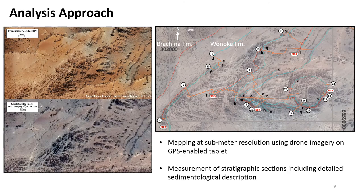To test our hypothesis we first acquired drone imagery, which is compared here to Google satellite imagery. We can see that the resolution has increased drastically, theoretically improving our ability to more accurately map surfaces. Mapping those surfaces, shown in blue on the map, we used these to connect measured sections shown in orange and evaluate the lateral and vertical transitions within a physical sequence stratigraphic framework.